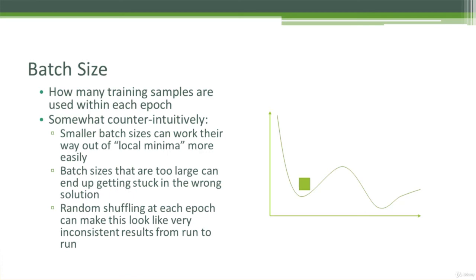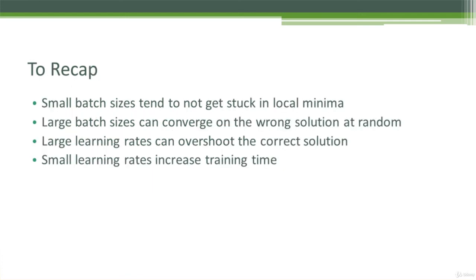And I'll see that in the end results from run to run, sometimes I'll get that answer and sometimes I'll get that answer. So hammer this into your head guys. Smaller batch sizes tend to not get stuck in local minima, but large batch sizes can converge on the wrong solution at random.